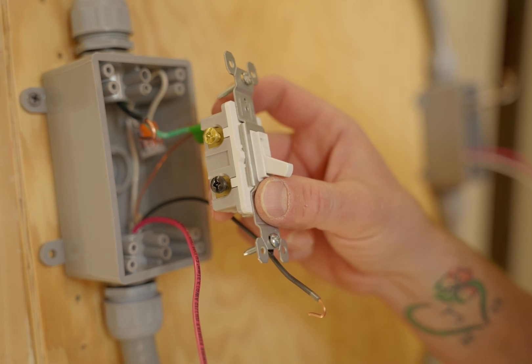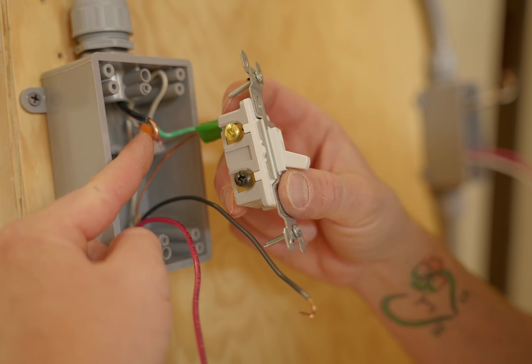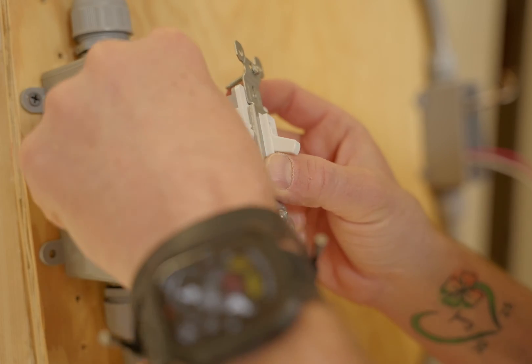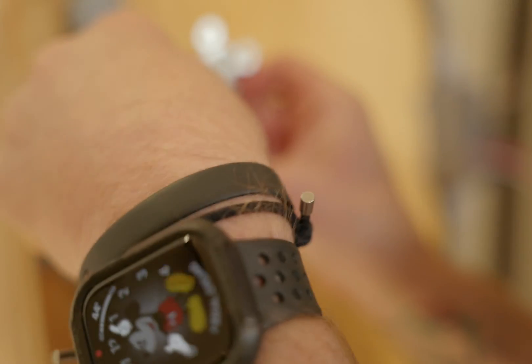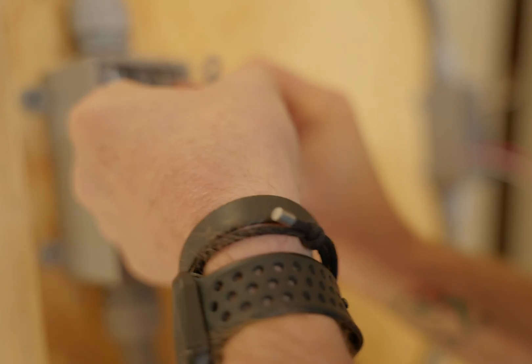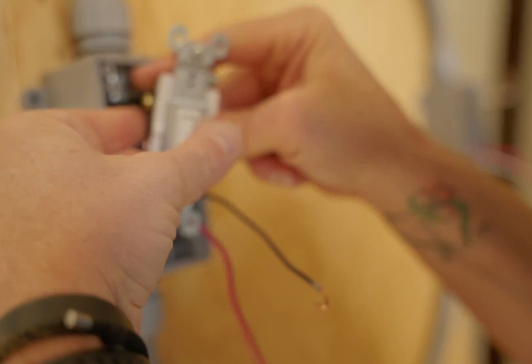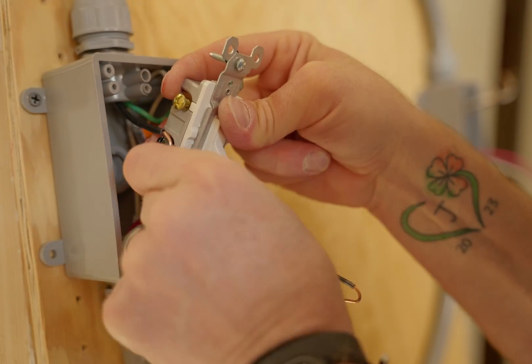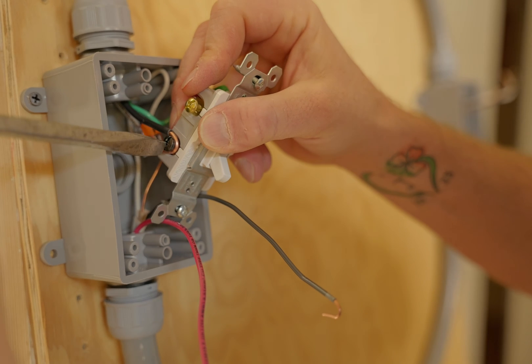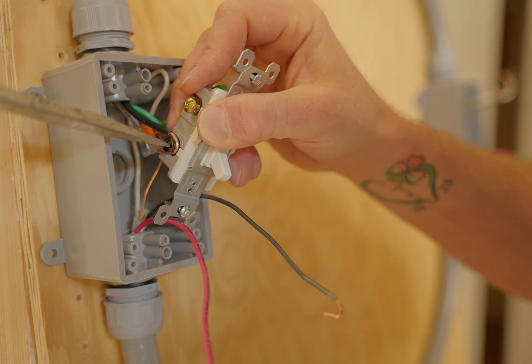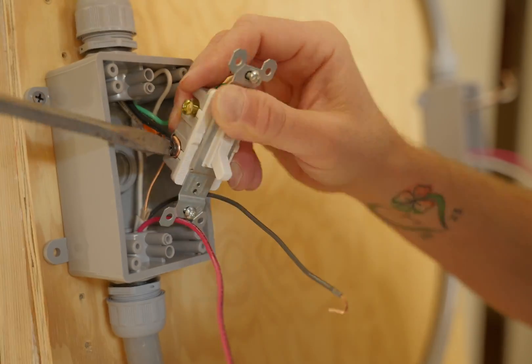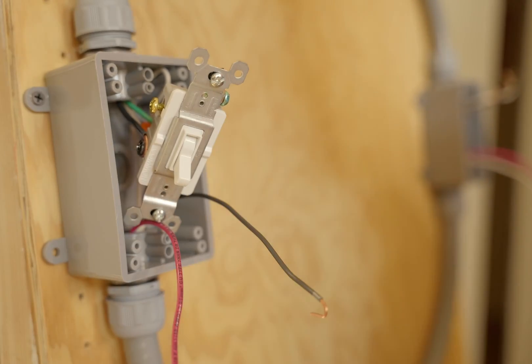Okay, so the next connection we need to make is our hot. Now this is our power wire coming from our power source. And we're going to connect that right onto the common lug. That's the lug at the bottom by itself. Again, we want to make sure that j-hook is in a clockwise rotation. And we'll cinch that down.